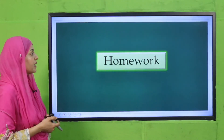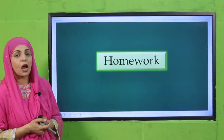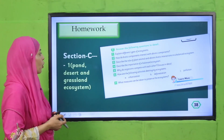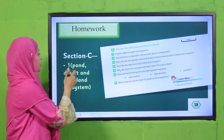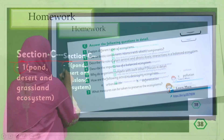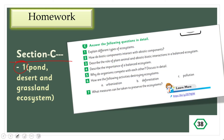I hope everybody has finished. Now quickly note down your homework. For homework, do section C, question number one: explain the different types of ecosystems — today you will explain pond, desert, and grassland ecosystems.